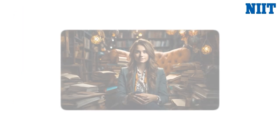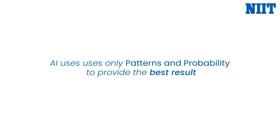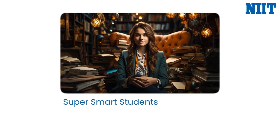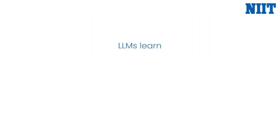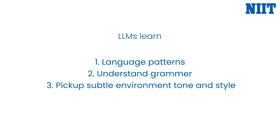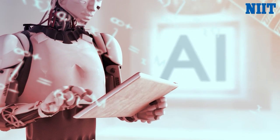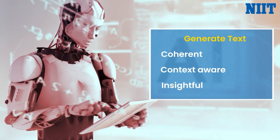So despite her vast knowledge, Lexi, like AI models, does not truly understand the meaning behind data — she just uses patterns and probabilities to provide the best possible responses based on her training. LLM models are like Lexi: super smart students who have read millions of books, articles, and online conversations. They learn language patterns, understand grammar, and even pick up subtle nuances in tone and style. And when you give an LLM a prompt, it uses this extensive background knowledge to generate text that is coherent, context-aware, and often surprisingly insightful.